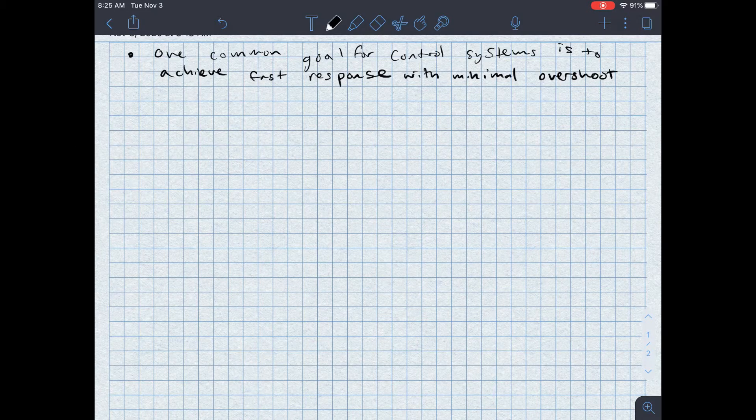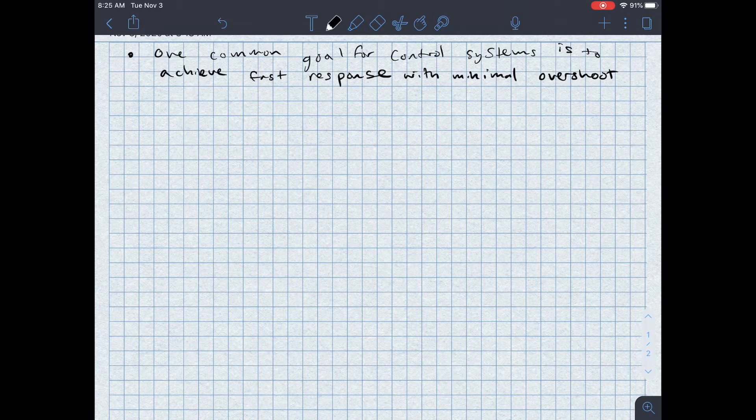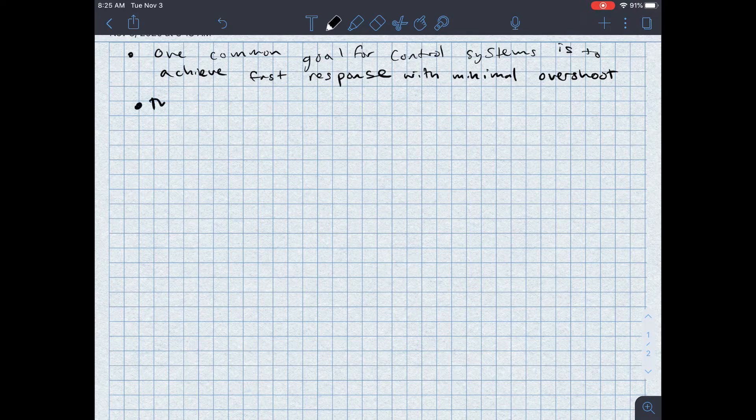One common goal for control systems is to achieve a fast response with minimal overshoot. This type of response is called the deadbeat response.